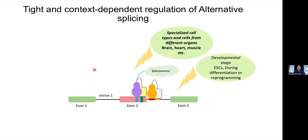However, alternative splicing regulation is always regulated in a context-dependent manner. The regulation varies — even of the same events — in a cell-specific manner, in a tissue-specific manner, and it has also been shown to vary according to developmental stages and so on.